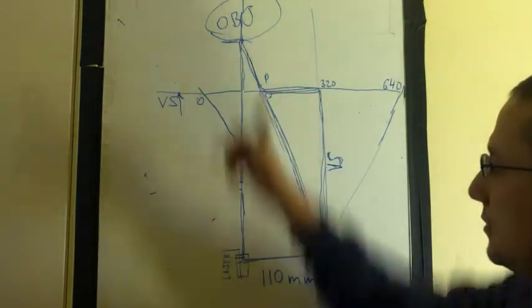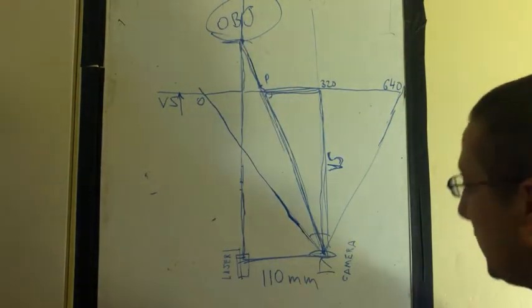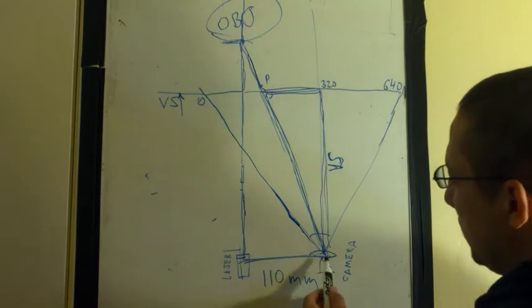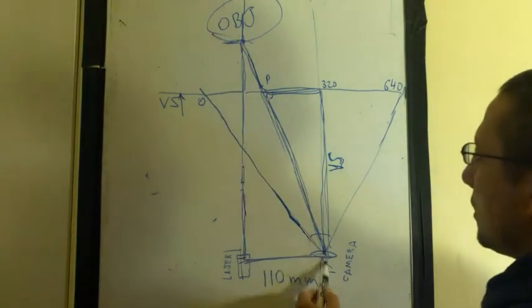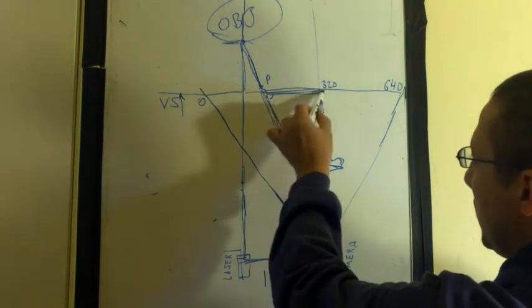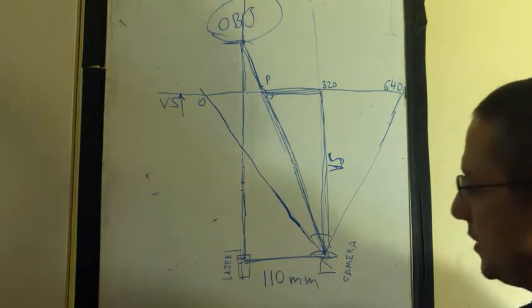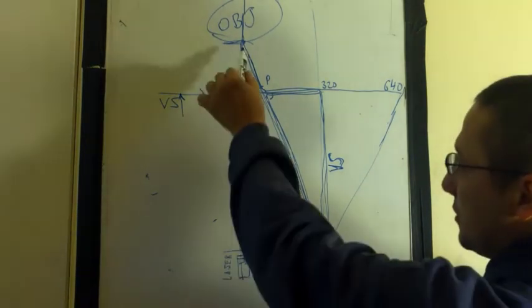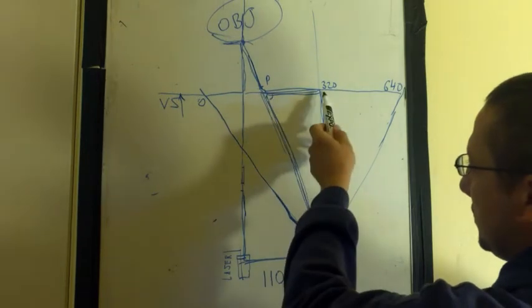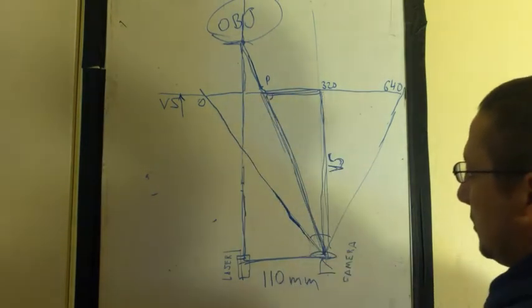Now, how do we find this distance? You can easily see two triangles, one here and another one right here. And you can see that the relationship between this distance and that distance is exactly the same as this distance and that distance.